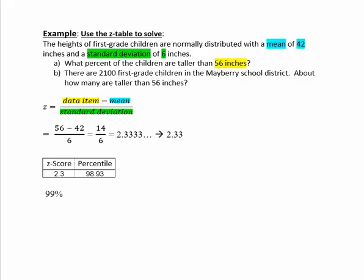But is the answer 99% or do we need to do a calculation with that? Well, we're looking in this case for the percent of children that are taller than 56 inches. Now the percentile definition is the percent that is less than 56 inches. We want the percent that is taller than, which would mean greater than.